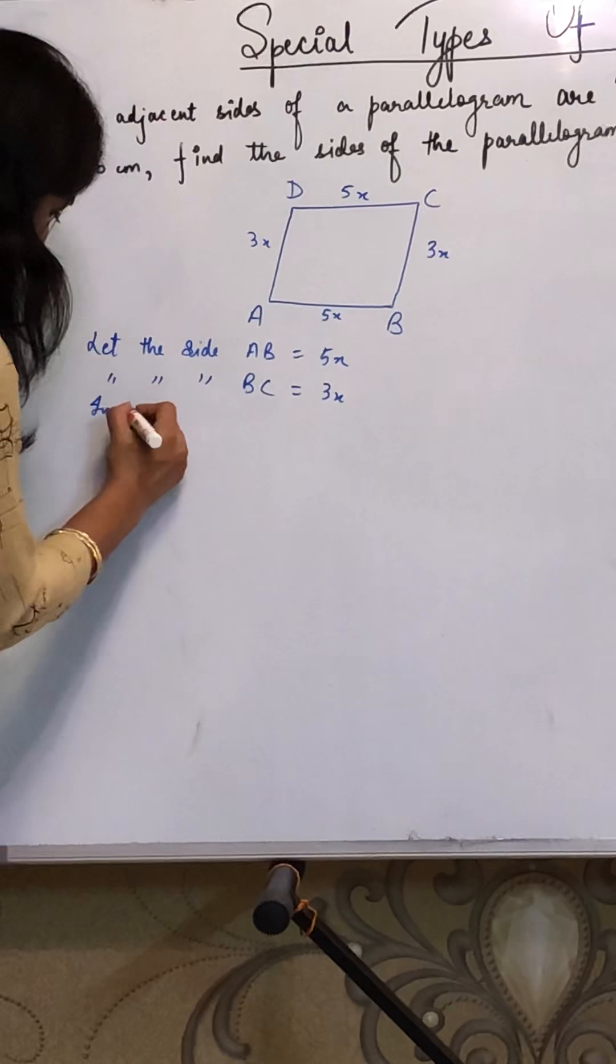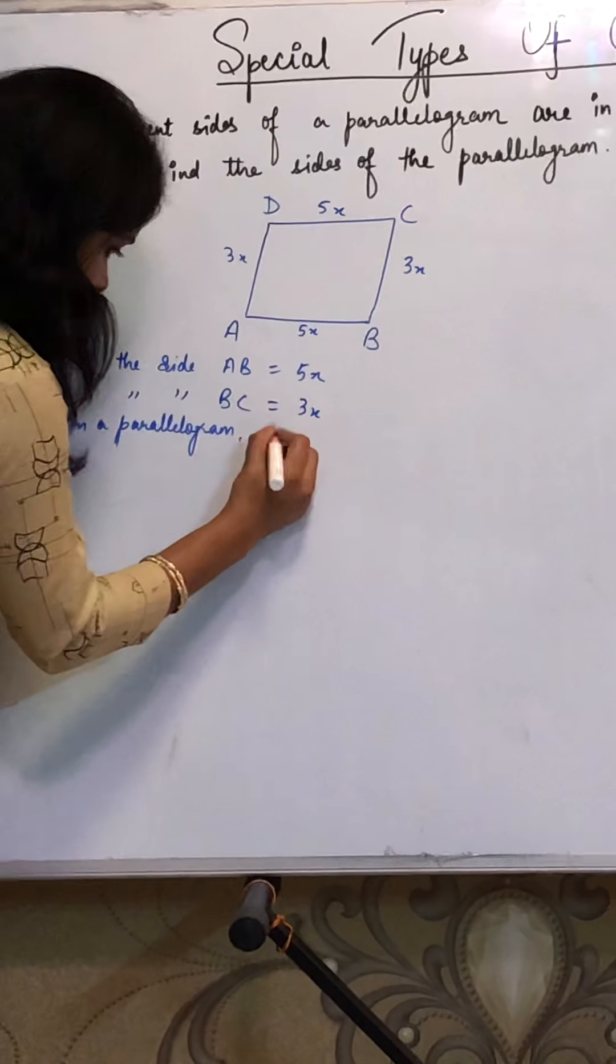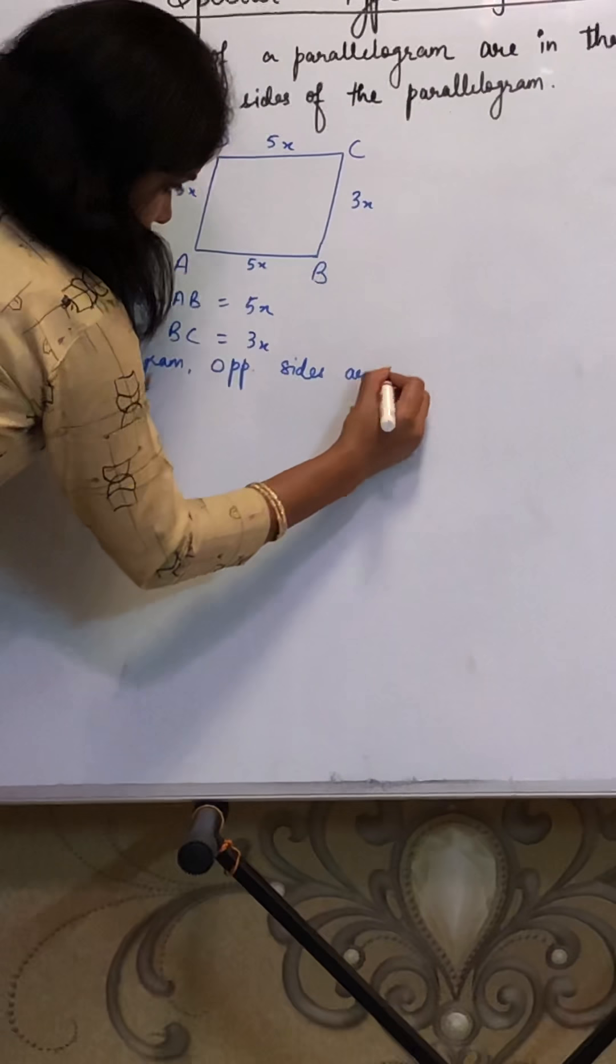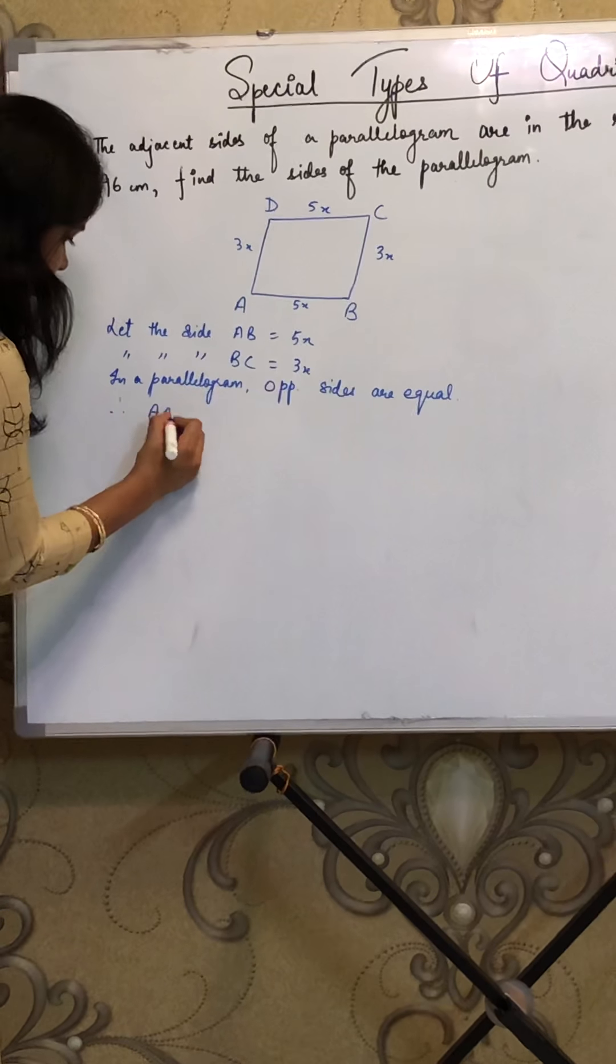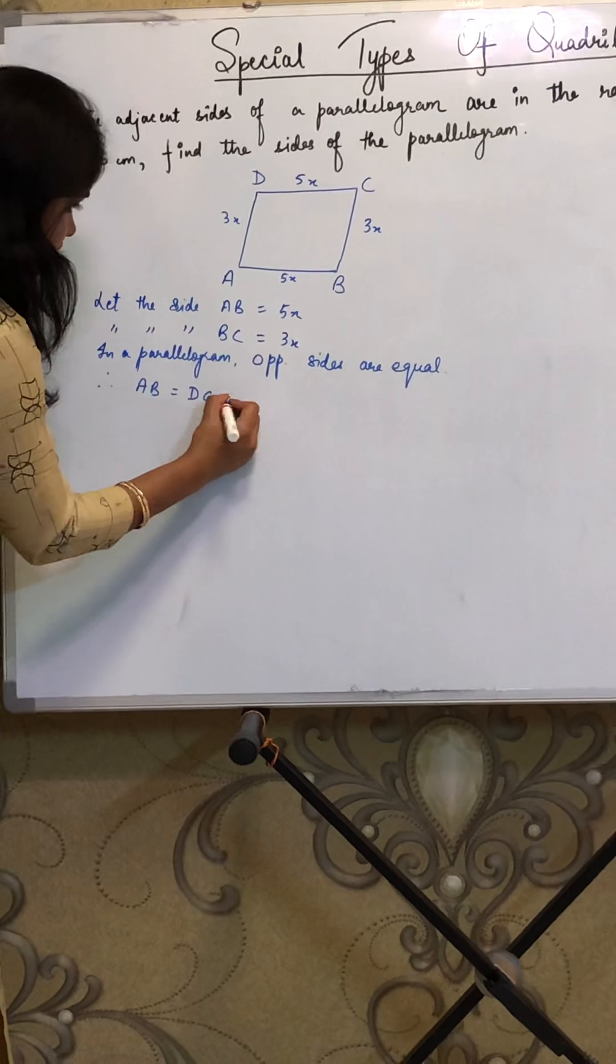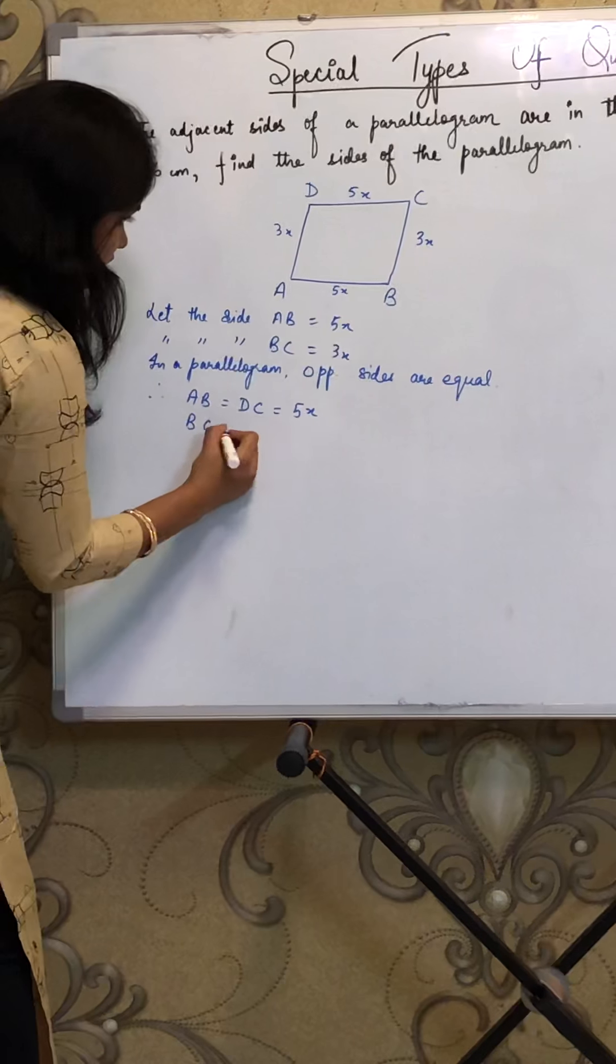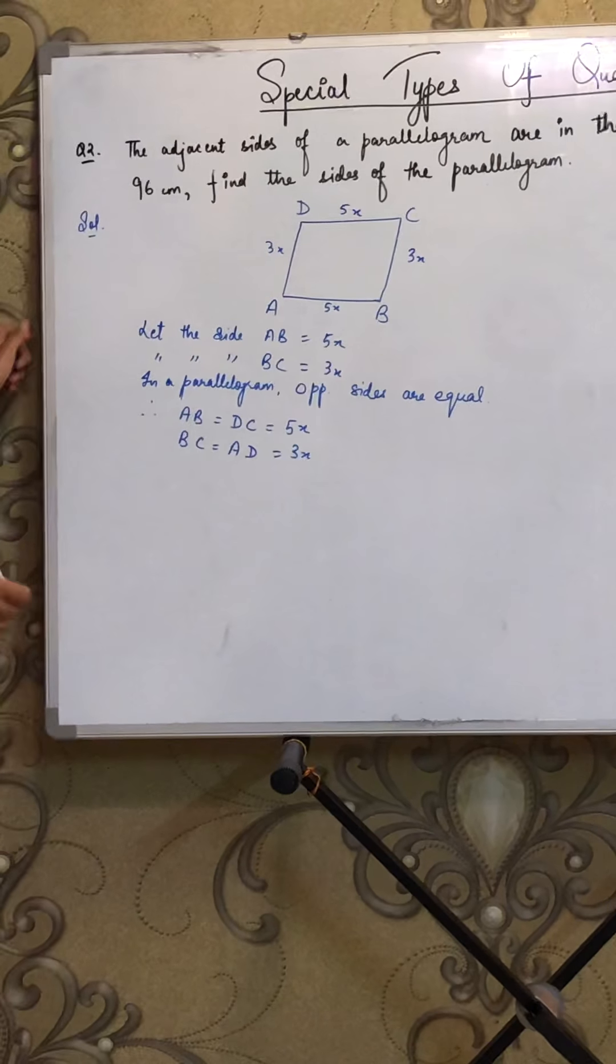In parallelogram, opposite sides are equal. Therefore, AB is equal to DC is equal to 5X, and BC is equal to AD is equal to 3X. Is it fine?